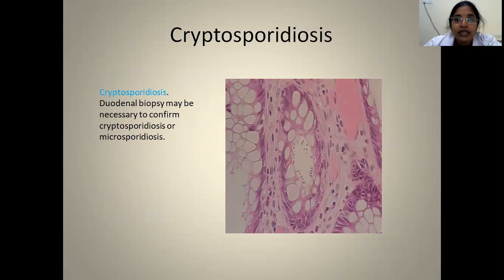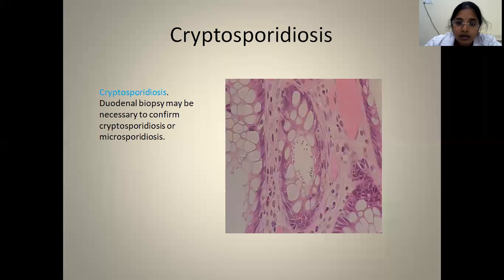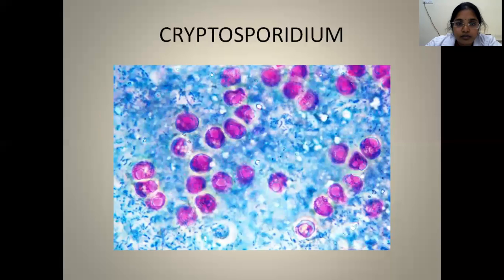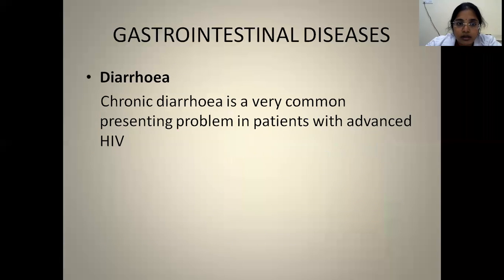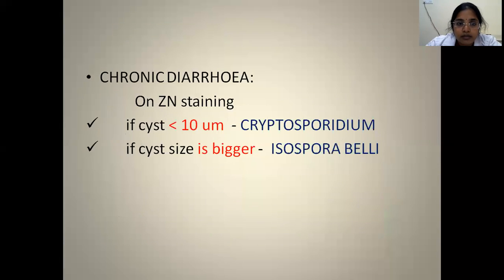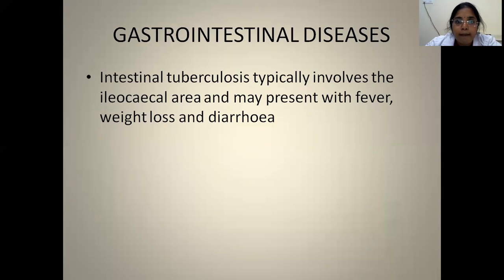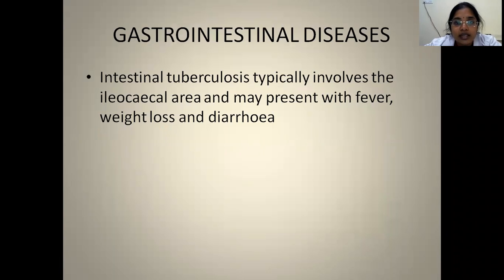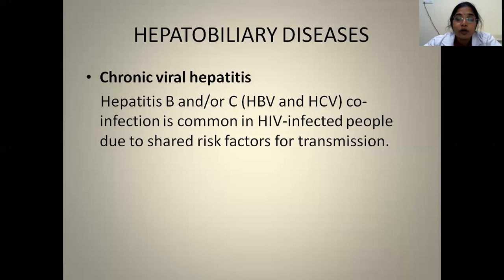If diagnosis is not obtained with stool microscopy, duodenal biopsy can be done, which confirms the cysts. 40% of patients with disseminated MAC have watery diarrhea. Intestinal tuberculosis typically involves the ileocecal junction, which is the most common site. Patients can present with a mass in the right iliac fossa, fever, weight loss, and diarrhea.